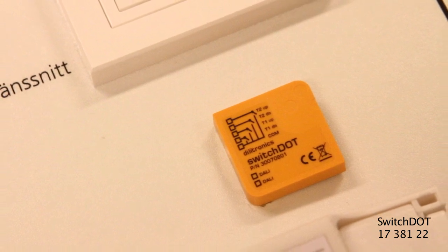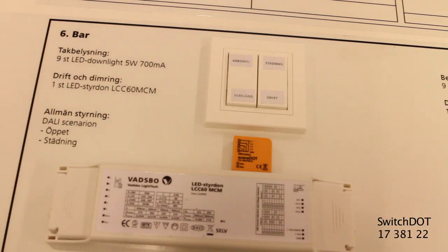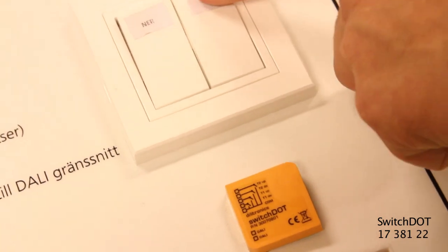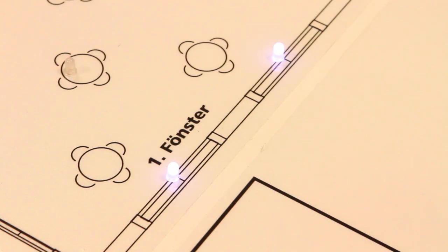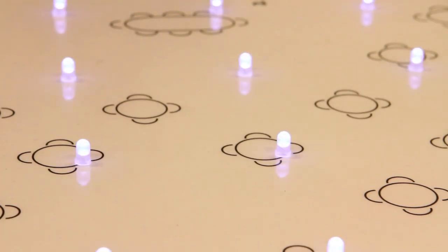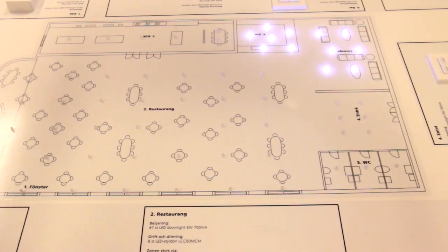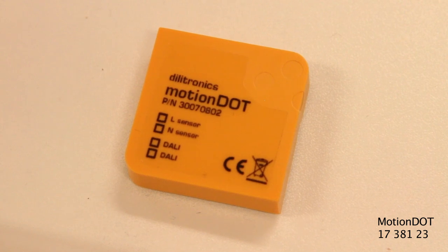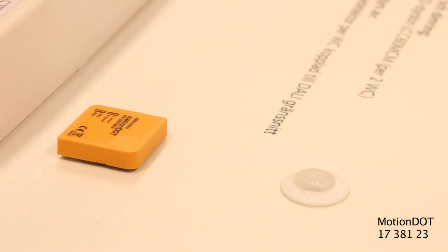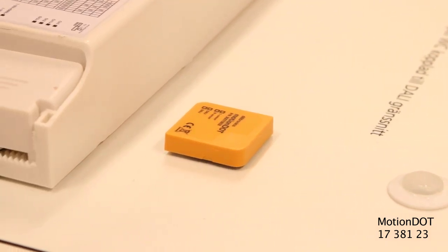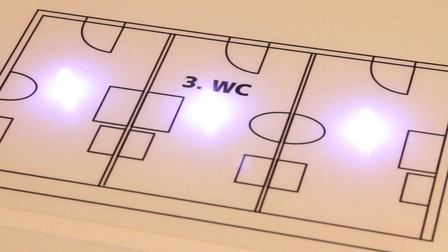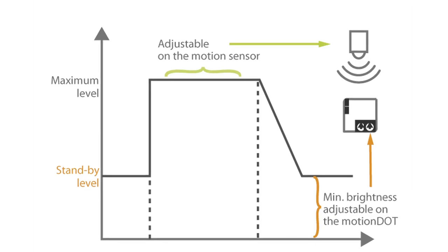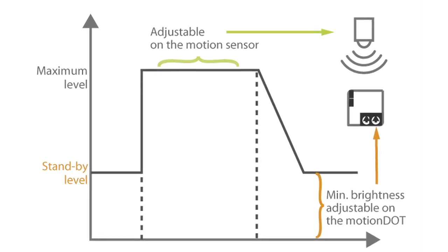Switch dot enables dimming up and down and provides an interface between a standard momentary push button and the DALI bus. For example, a double switch connected to the control modules dims up or turns on the light with one button, while the second button dims down or turns the light off. Switch dot can be set to control an individual device, a group of devices, or all devices on the DALI bus. Motion dot is an interface between a regular presence sensor or motion detector and the DALI bus. The time delay is controlled by the motion detector. By presence, lighting is activated to 100%, and in absence, lighting is set in a standby mode. Standby mode can be adjusted from fully off to 75% brightness. Motion dot can be set to control a group of devices or all devices on the DALI bus.